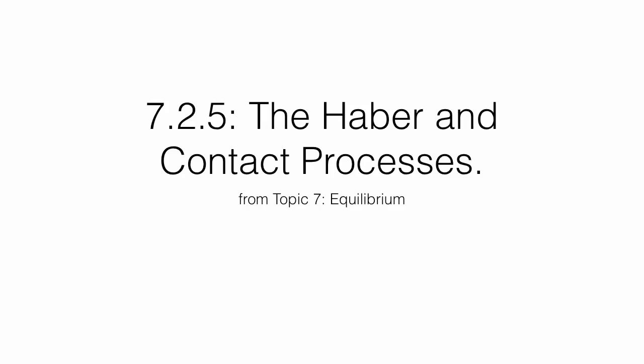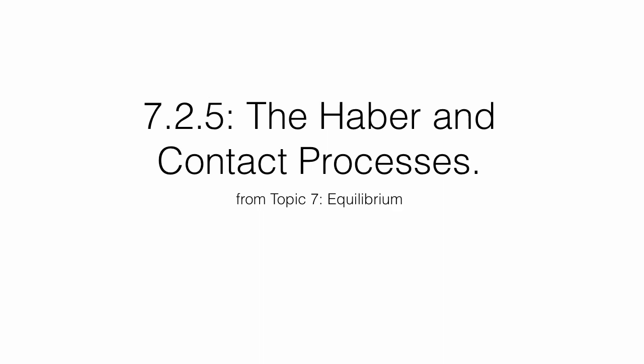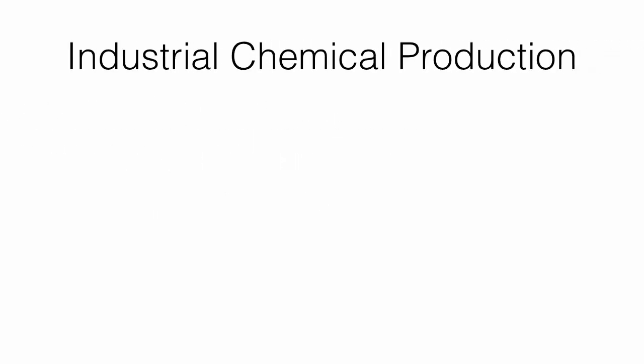This is 725, the Haber and Contact Processes. The Haber and Contact Processes are both for industrial chemical production. In that case, we're worried about two ideas. The first is yield, which is how much product we get.